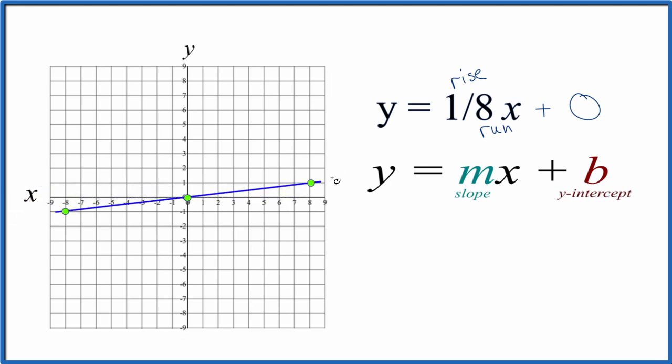Now, we have our line for y equals 1 eighth x. Let's put a line through that, and then we'll put arrows to show that our line goes to infinity. So that's our graph for y equals 1 eighth x. Again, you could use a table of values to do this, but slope intercept form, that's really easy to do, and with fractions like that, it's especially easier.